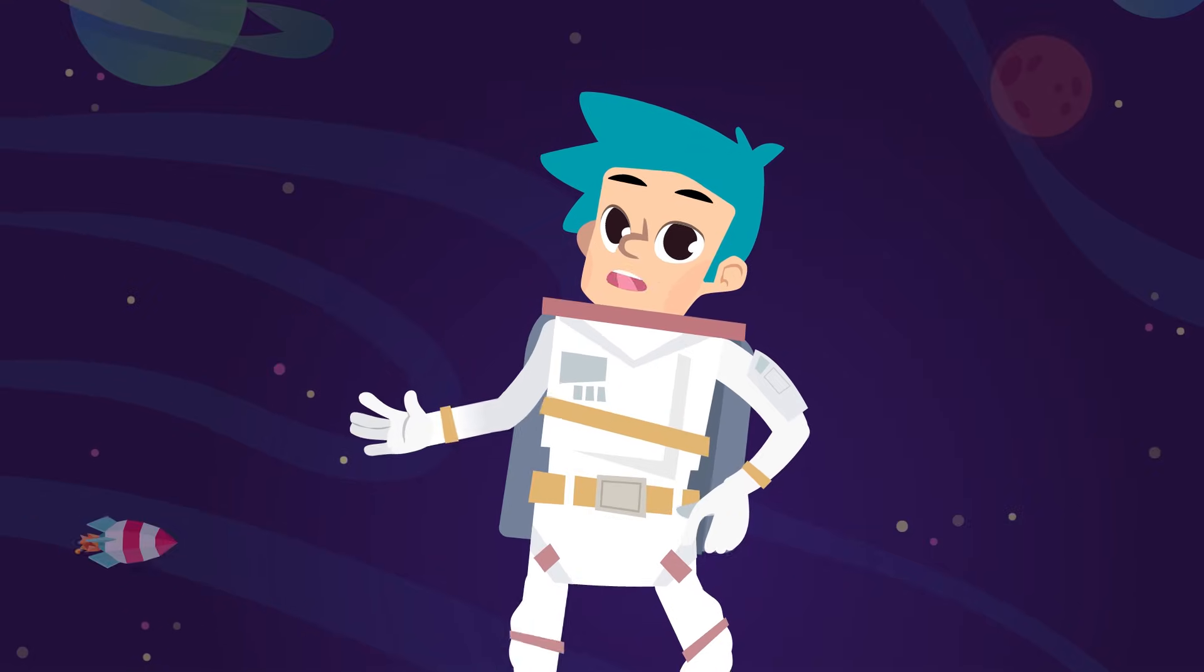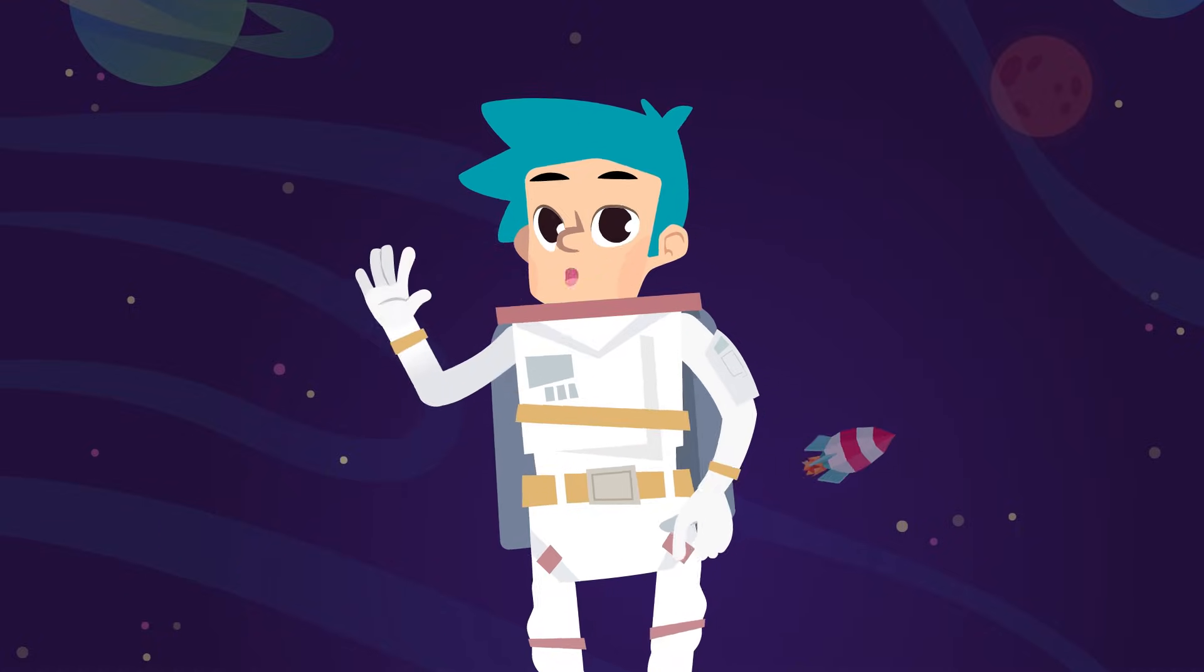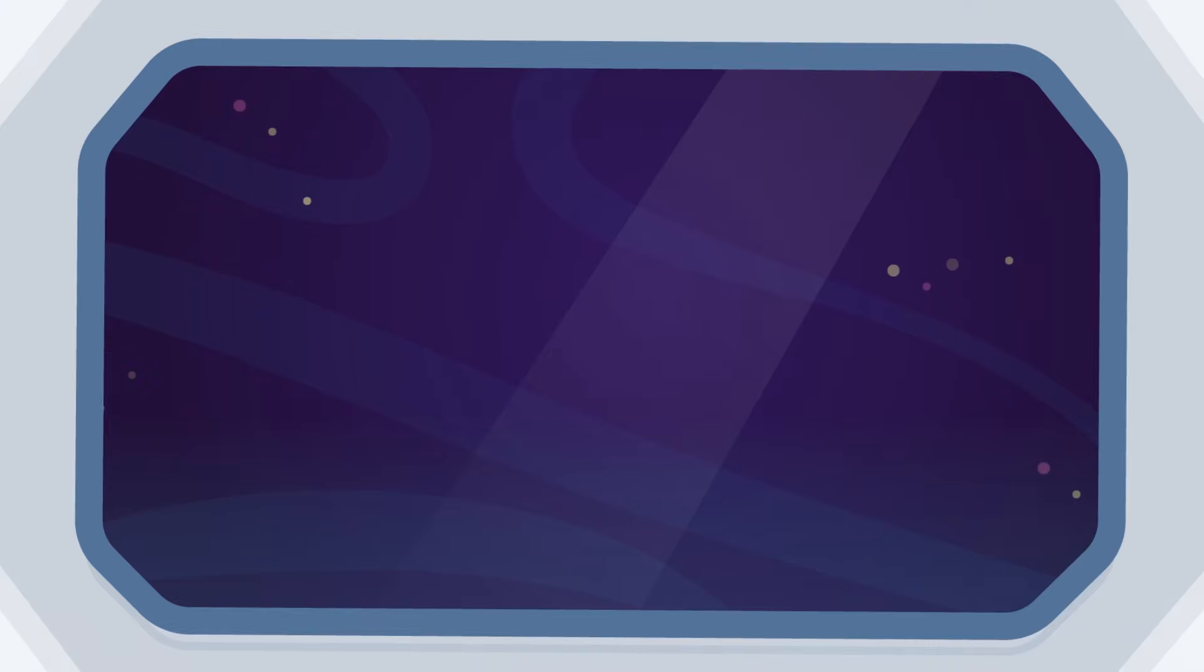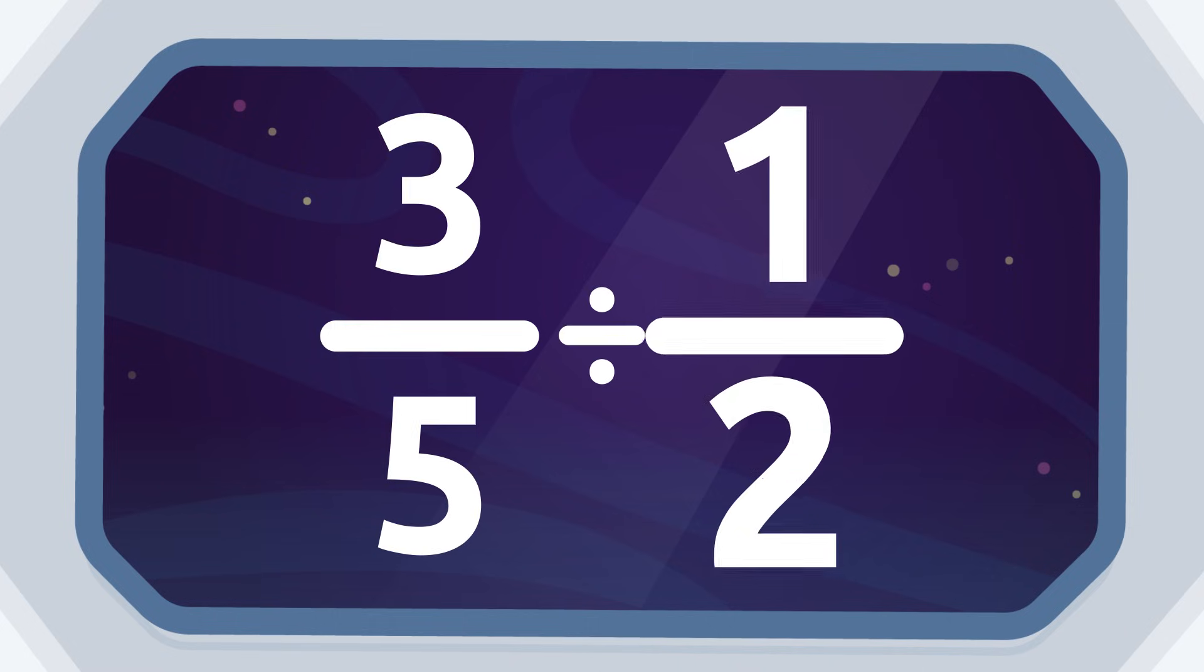Did you understand how it's done? Let's look at the next example. We need to divide three-fifths by one-half.